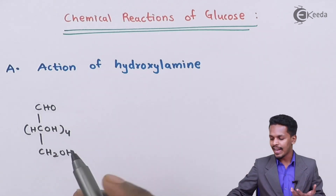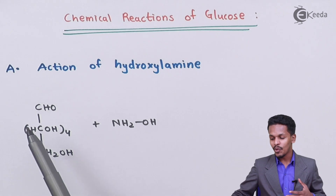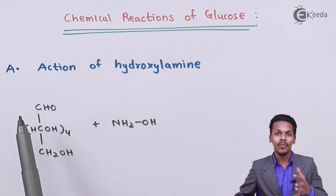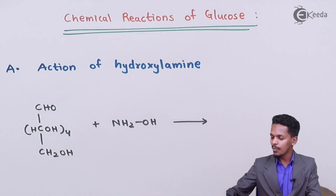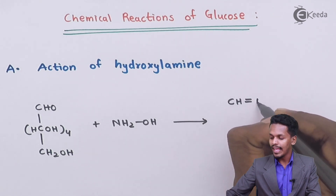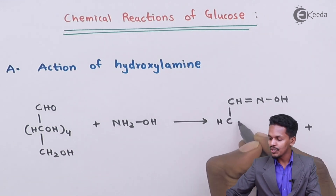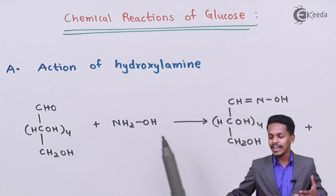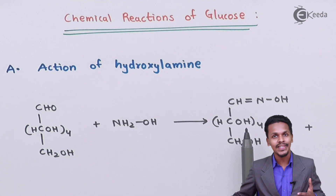Suppose we react glucose with hydroxylamine, which is NH2OH. We understand from Fischer's projection formula that the upper carbon atom — the aldehyde carbon — can get easily oxidized. So H2 is removed as a byproduct, and the main product we get is CH=N-OH at the top, with CHOH four times and CH2OH below. This product is an oxime obtained from glucose, and its name is glucoxime.